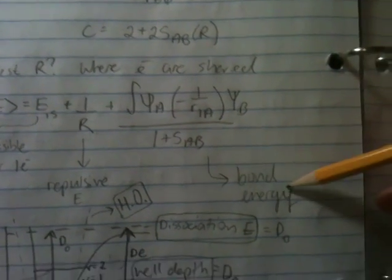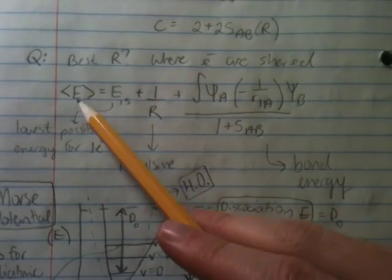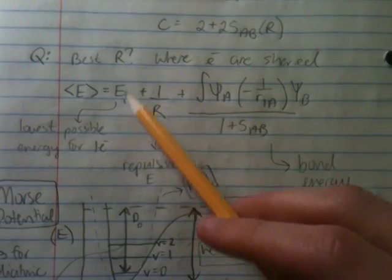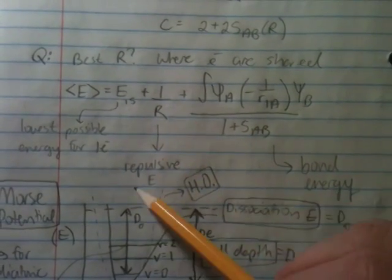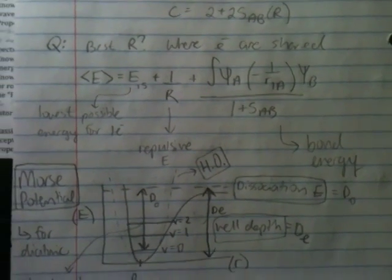This is all over your normalization constant. This, total, gives you your bond energy. So, your three terms, finding this expectation energy is your lowest possible energy that is given for one electron, repulsive energy, and bond energy.